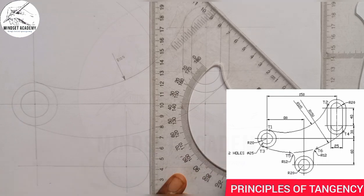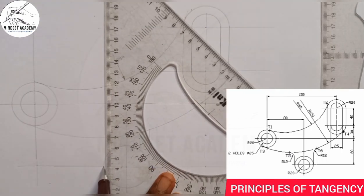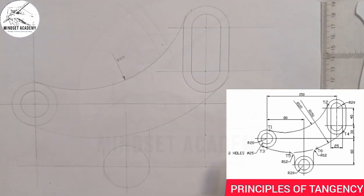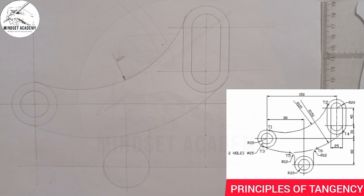If you look at this, the arc has a radius of 12 and it's touching this circle. I'm going to add this 12 to the radius of 50, which gives us 162. So I'll measure 162 on my ruler.